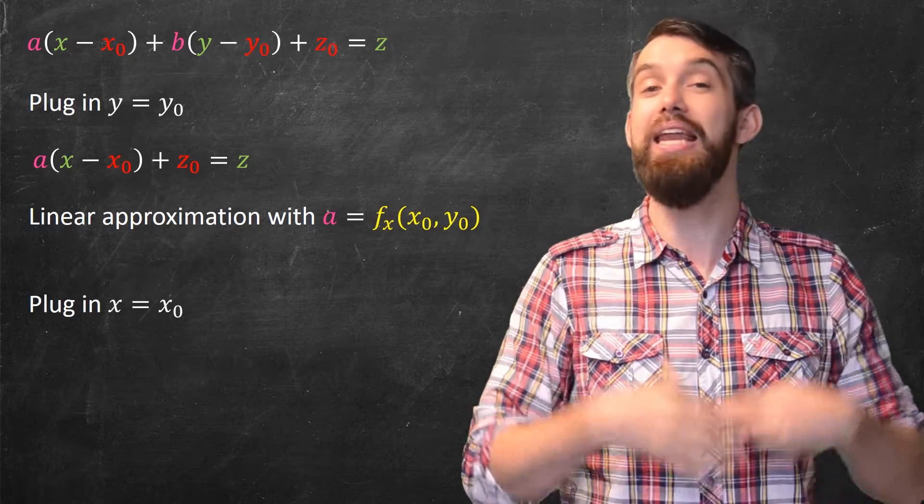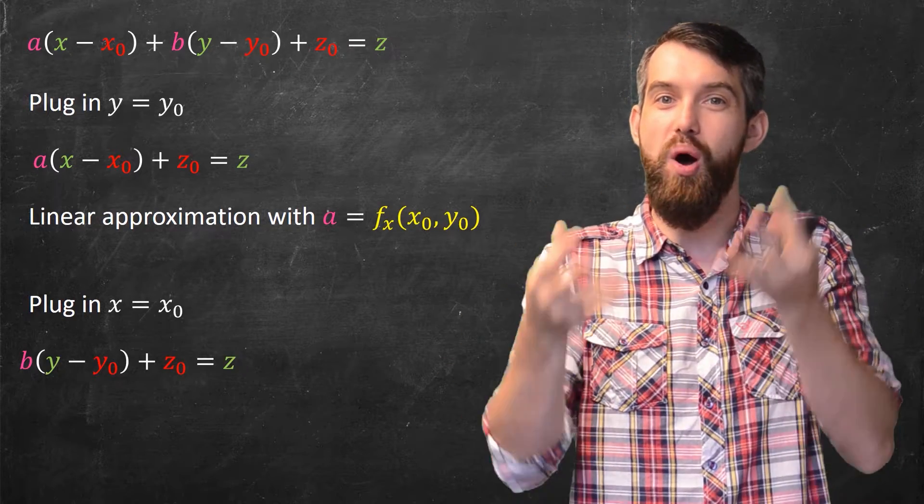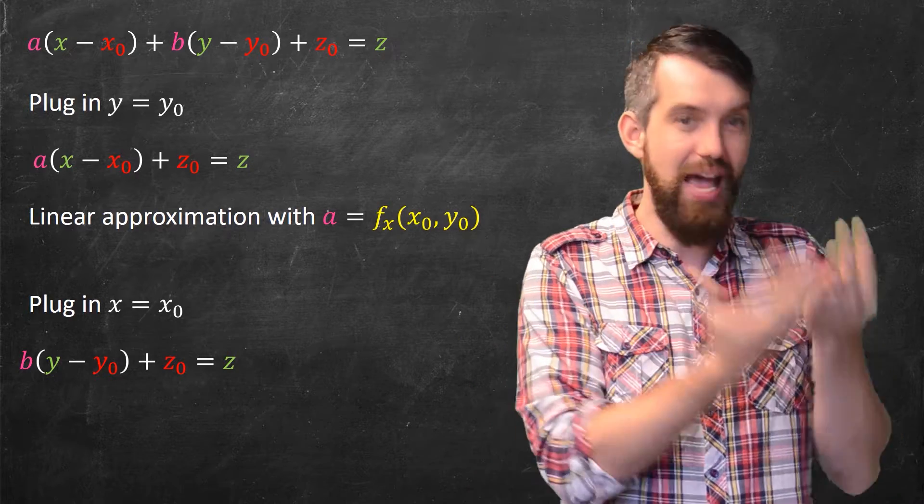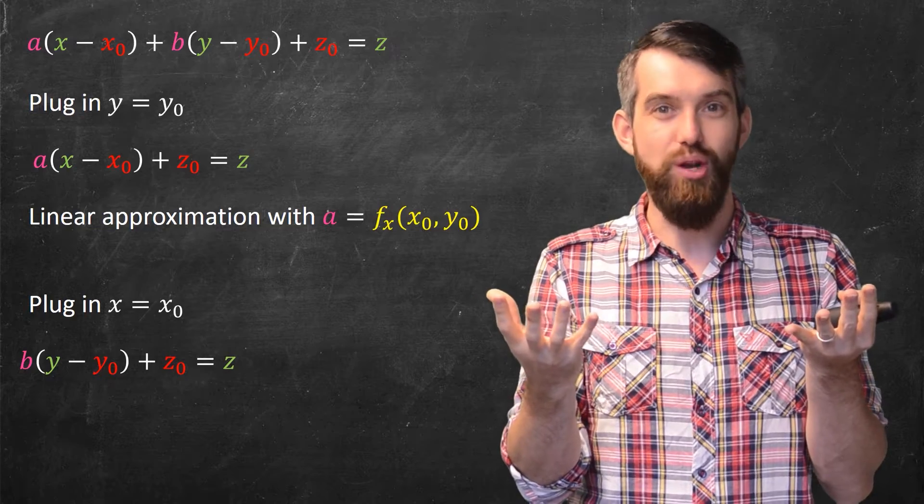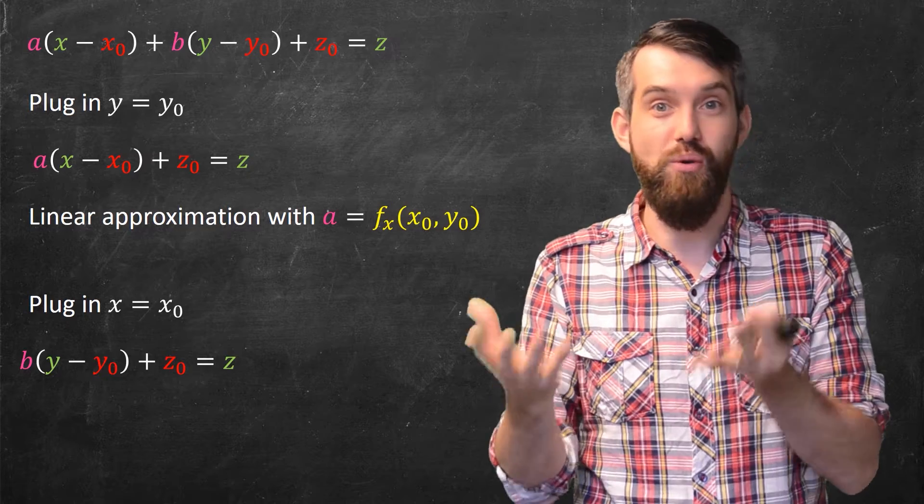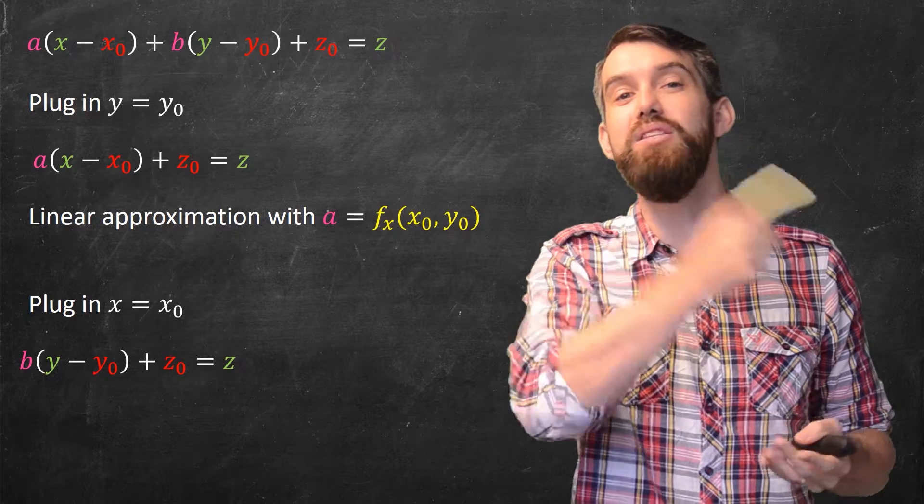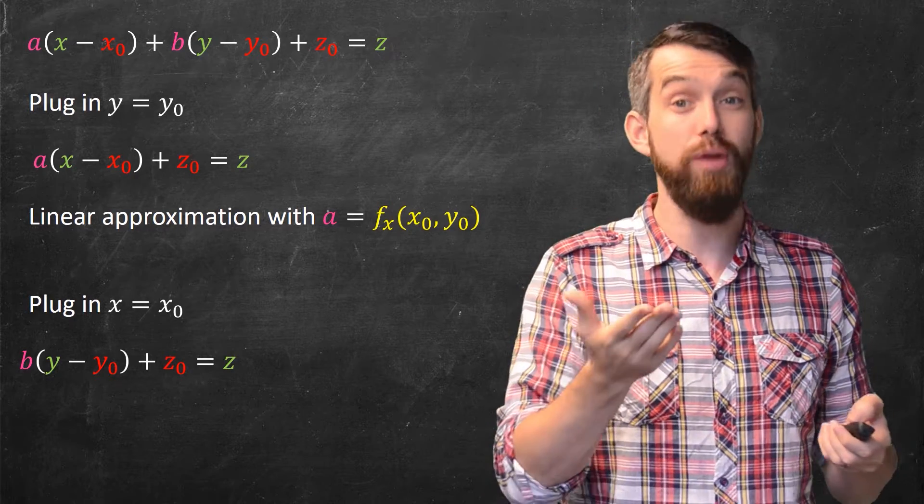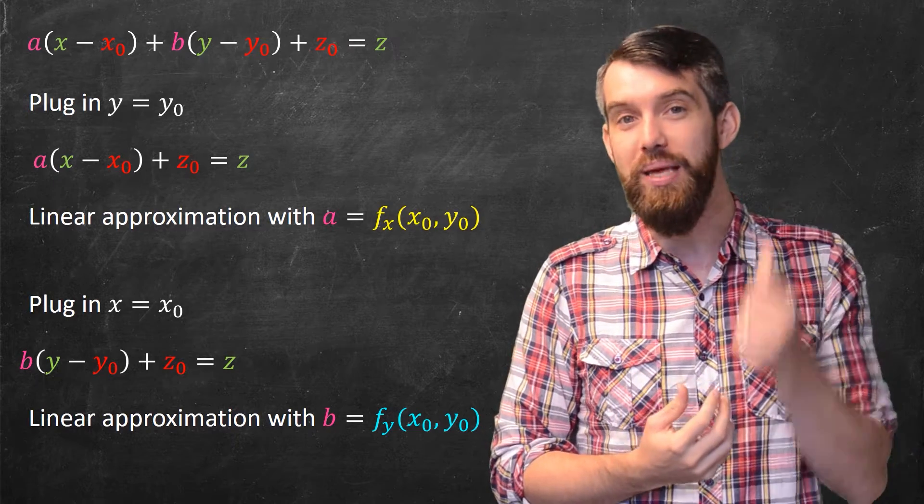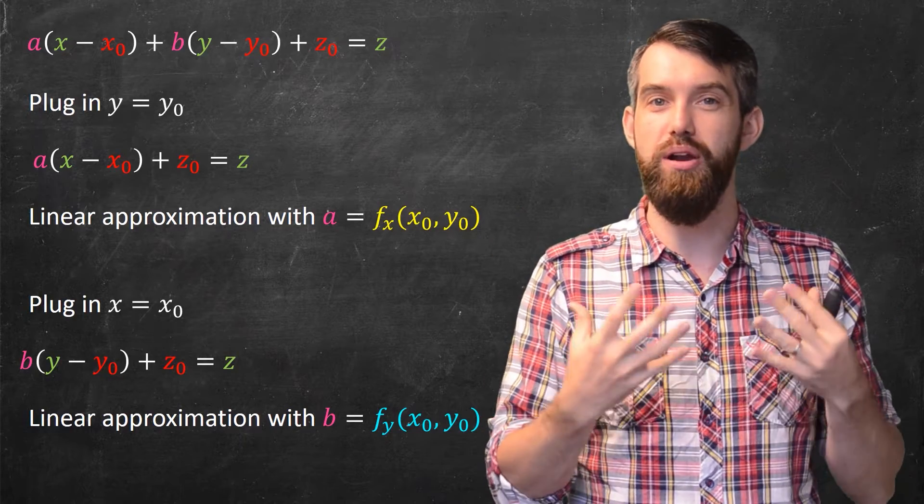Likewise, let's go and plug in x equal to x0. That gives a different linear equation b times y minus y0 plus z0 x0 equal to z. Again, I have a single variable function. The z now is only depending on y. And the question about how we find a linear approximation to that single variable question was asked and answered in single variable calculus. The answer was you made the slope of the line the derivative. In this case, it's the derivative with respect to y now. So our linear approximation will be a linear approximation when b is equal to the partial derivative of f now with respect to y at the value of x0, y0.